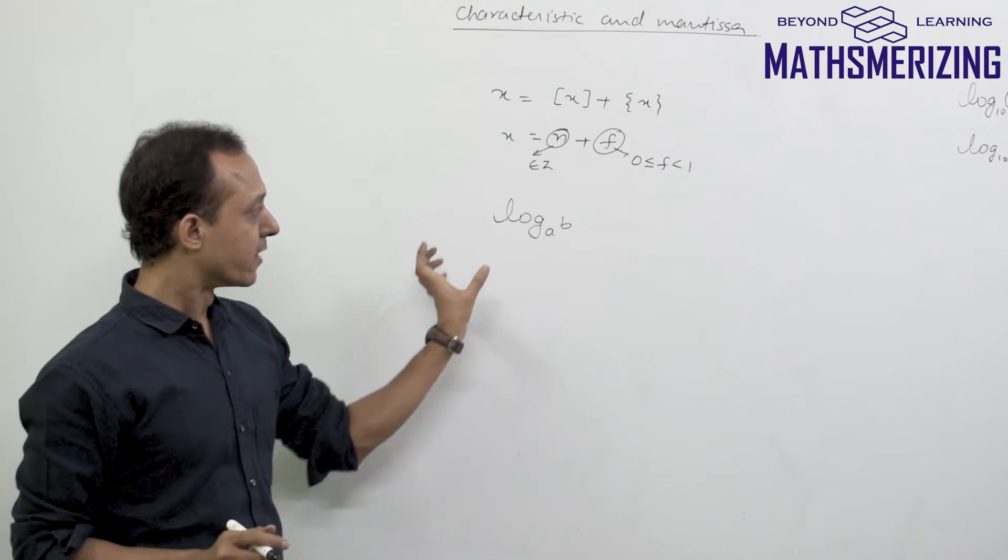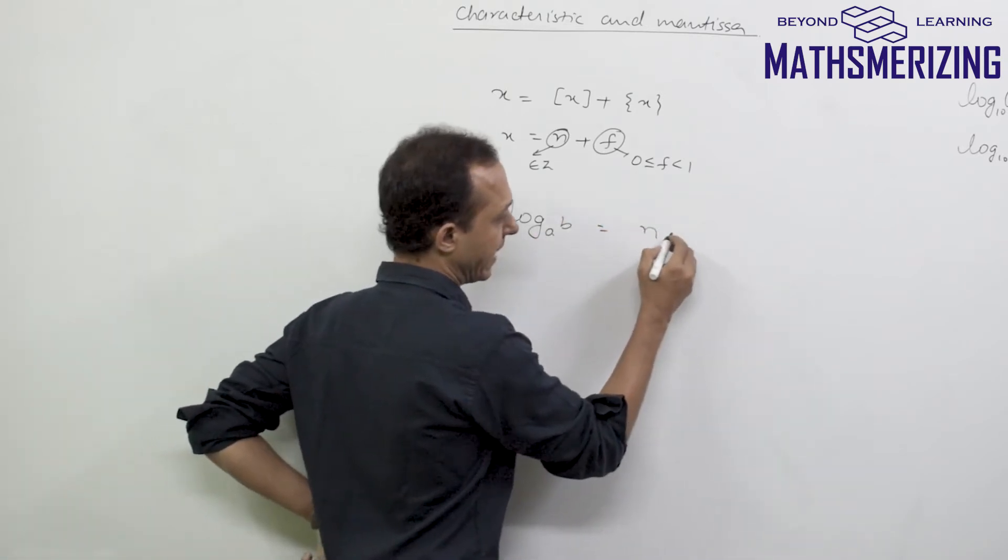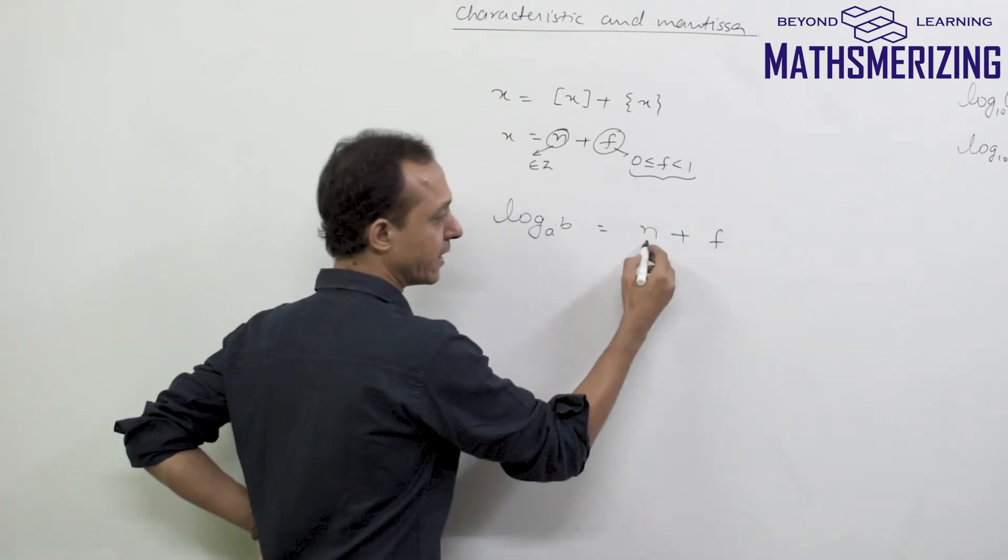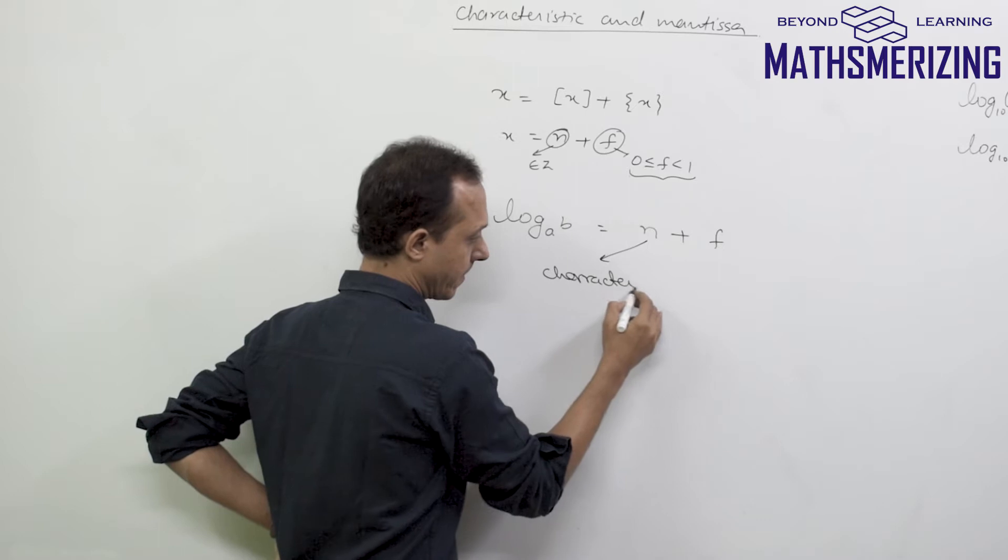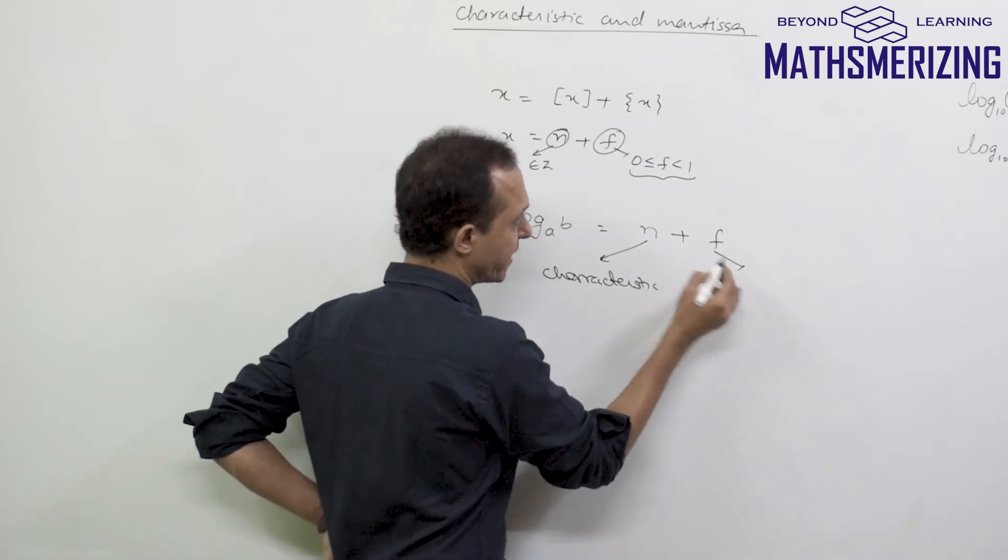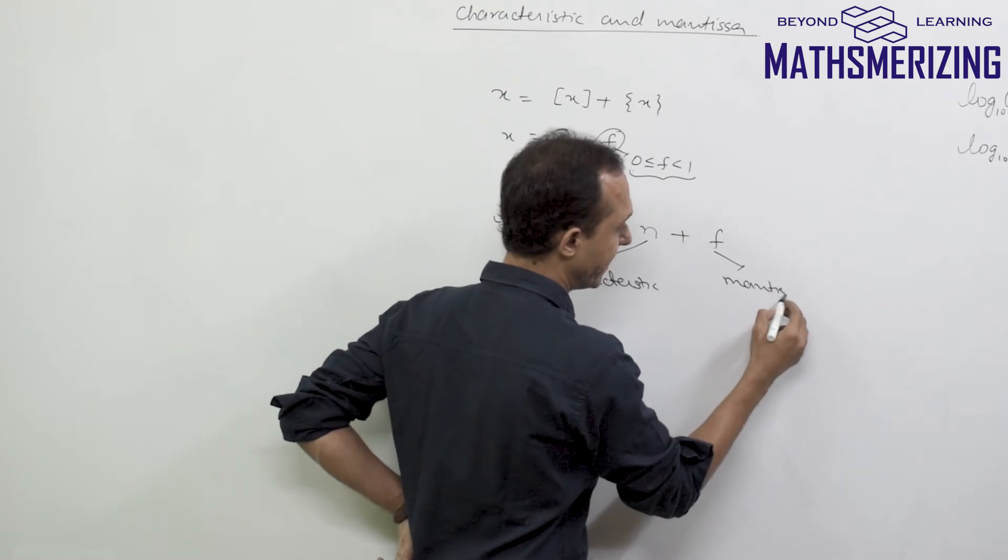Any log is just another number, so I can express log base A of B as n plus F. This integral part is called the characteristic, and this fractional part, which should lie between 0 and 1, is called the mantissa.